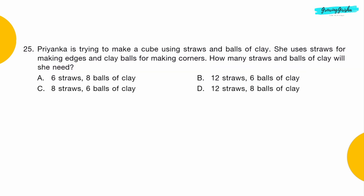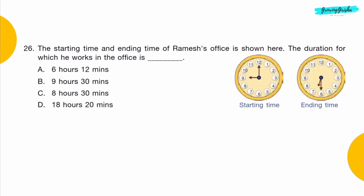Question 25: Priyanka is trying to make a cube using straws and balls of clay. She uses straws for making edges and clay balls for making corners. How many straws and balls of clay will she need? Option D: 12 straws and 8 balls of clay.